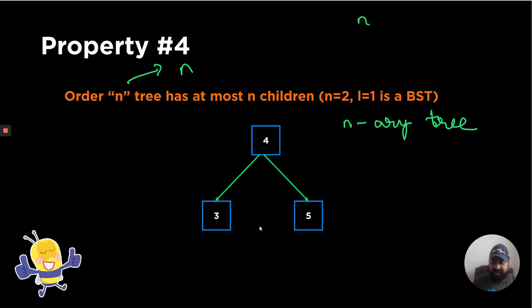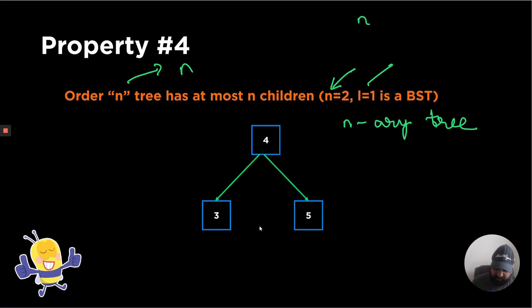A BST is actually a special case of a B-tree. When N equals 2 — meaning a node can have 0, 1, or 2 children — and L equals 1 — meaning each node has just one value — that's exactly a BST.